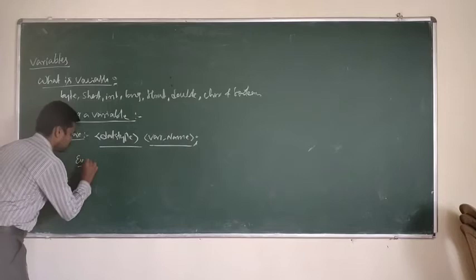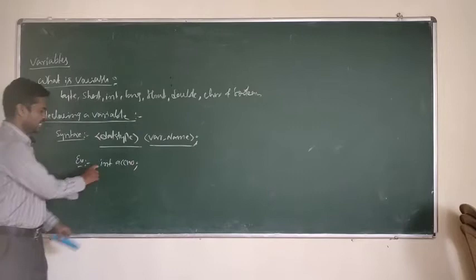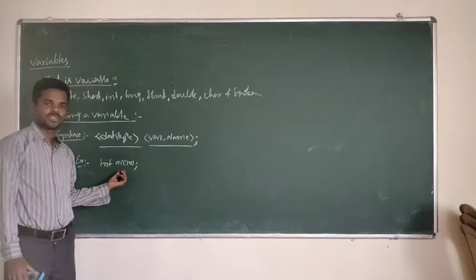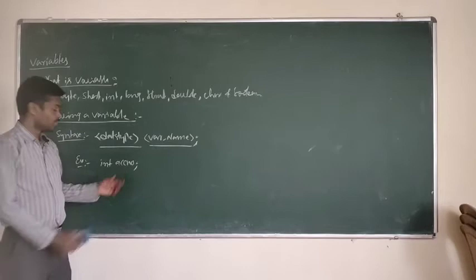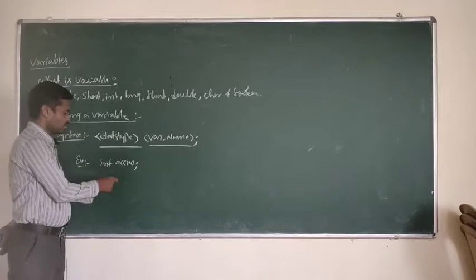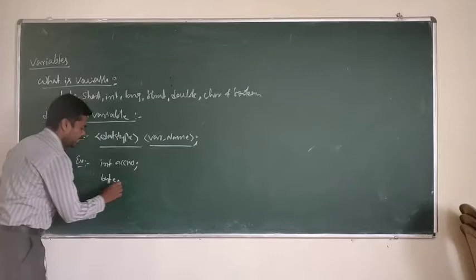Now take one example: int accountNumber. Here, accountNumber is a variable name of type int — it can store integer values. You know the range of integer values. Integer is having 4 bytes, and it can store values in that particular range. Similarly, you can also declare other types.